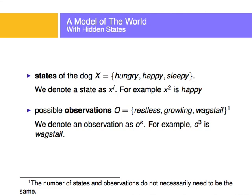We will denote a state as x superscript i. For example, x of 2 is happy — that's the second state. x1 would be hungry and x3 would be sleepy. There are also observations. I can see that the dog is restless, growling, or wagging the tail. I have three states and three observations — they don't need to match; I can have many more observations than states.